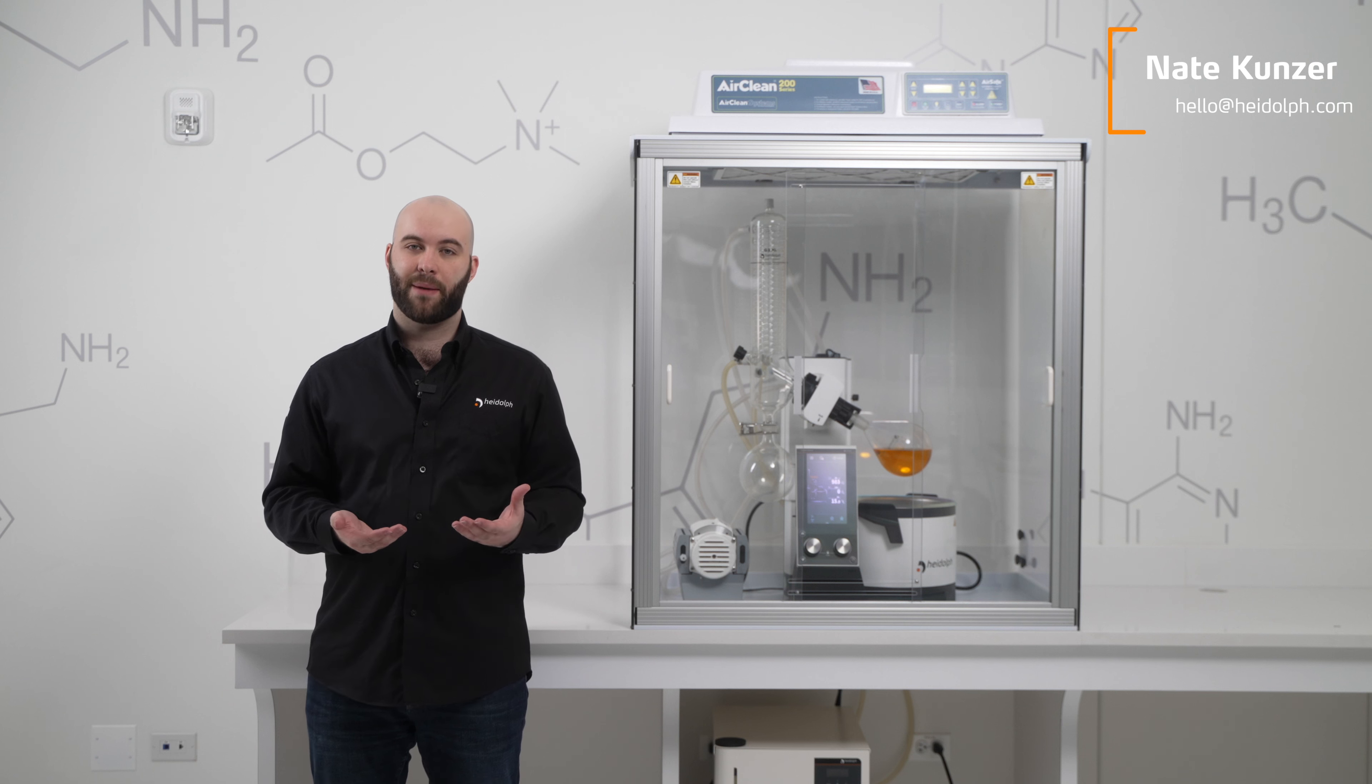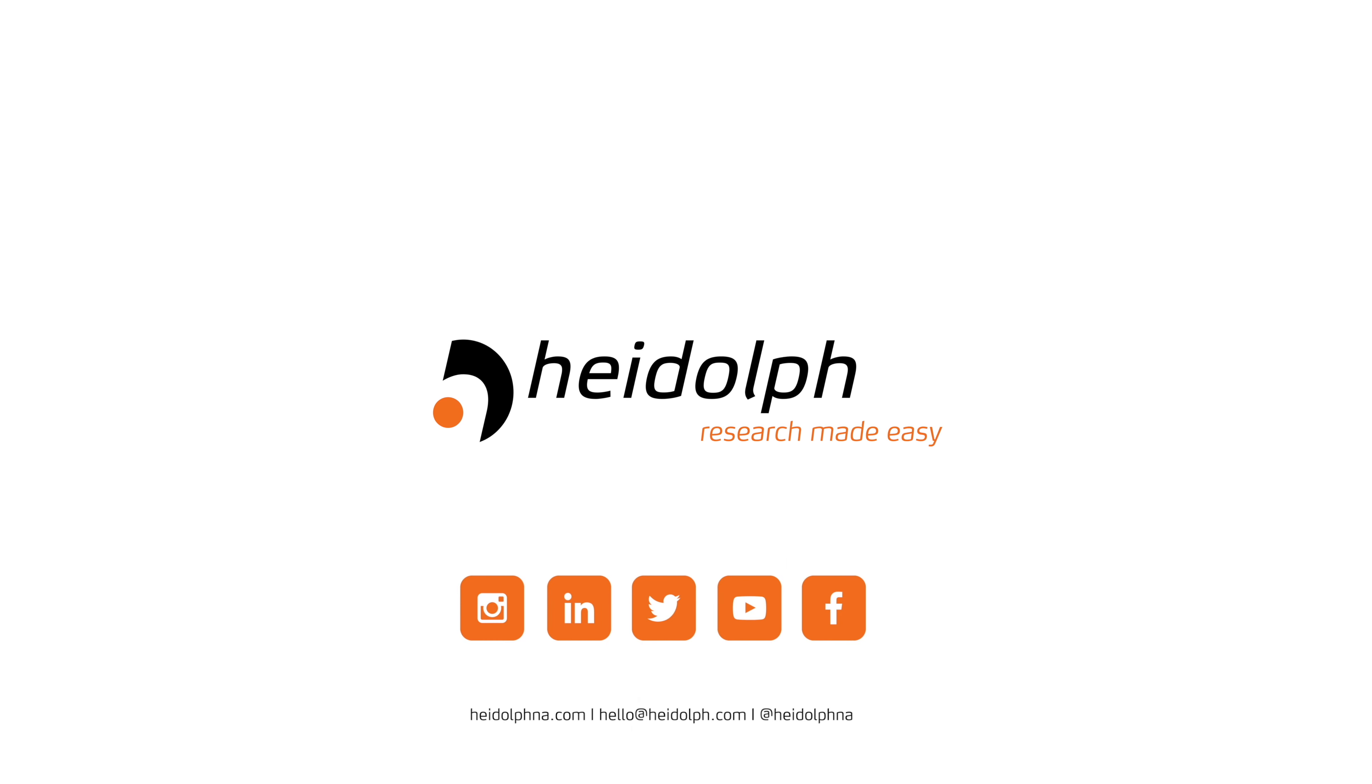The air clean enclosure has multiple different access points so you can thread power cables or your chiller tubing into it. They're conveniently located so you can put your chiller underneath your lab bench and run it through the back and still get inside of your enclosure.